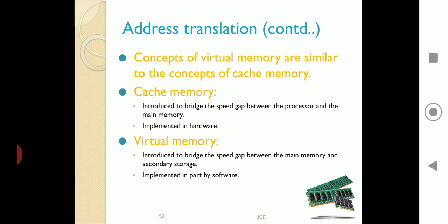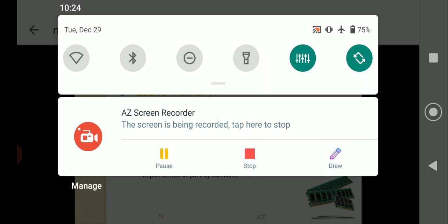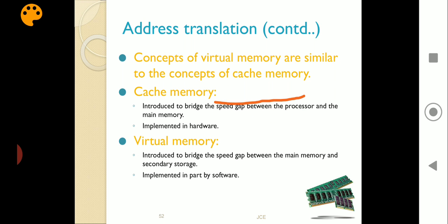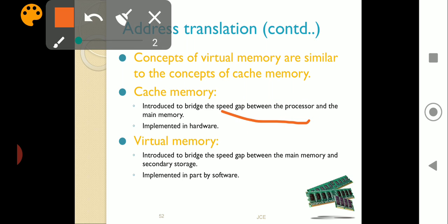Cache memory tries to bridge the speed gap between the processor and the main memory. Virtual memory tries to bridge the gap between the main memory and secondary storage. Another important difference: cache memory is always implemented in hardware, whereas virtual memory is always implemented as part of software.